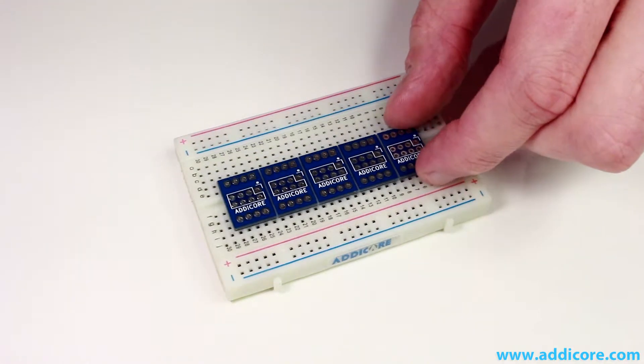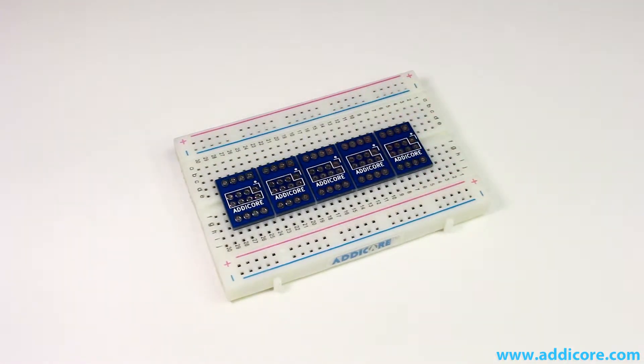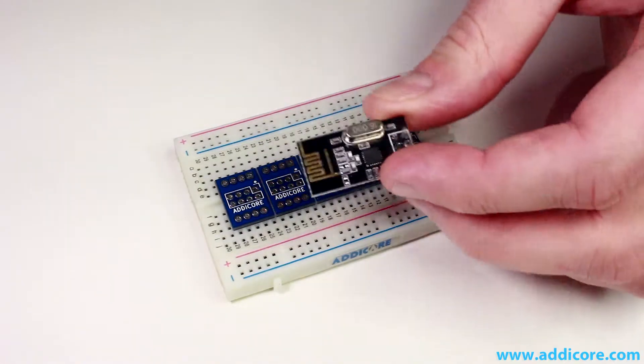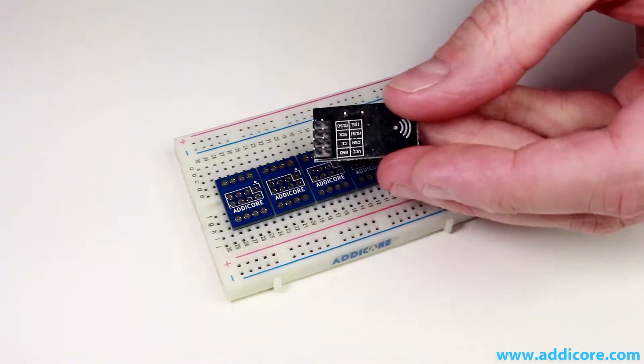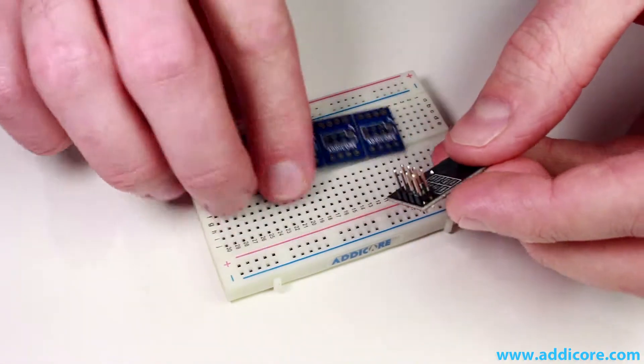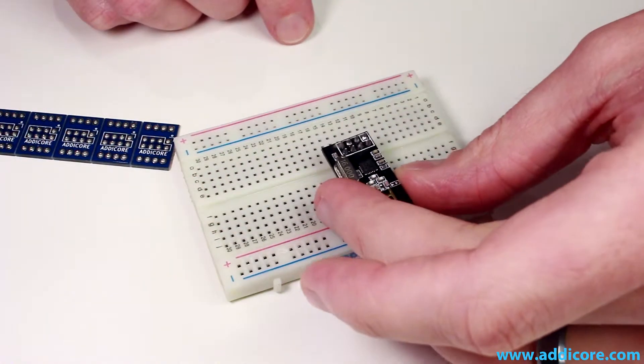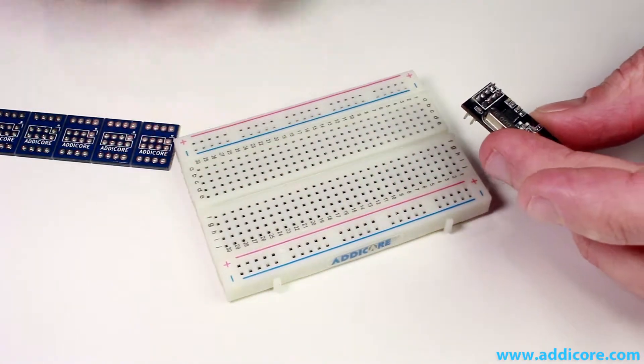It's really good for an NRF24L01 Plus module or an ESP module, an NRF module for example. It's hard to put the pins of an NRF module into a breadboard because they're too close to be able to make the gap jump in a breadboard.